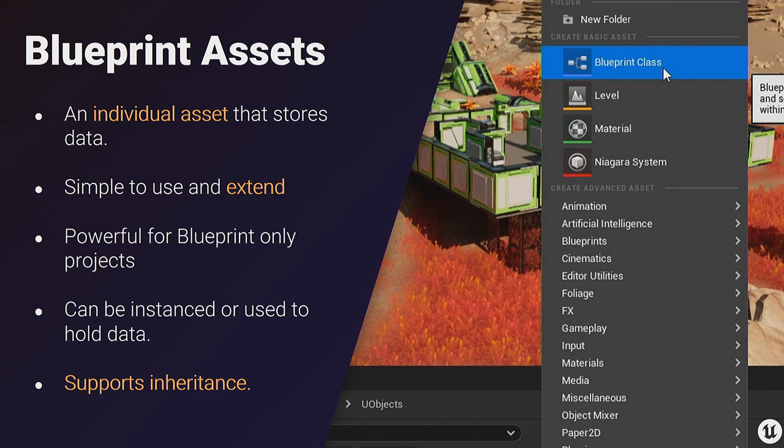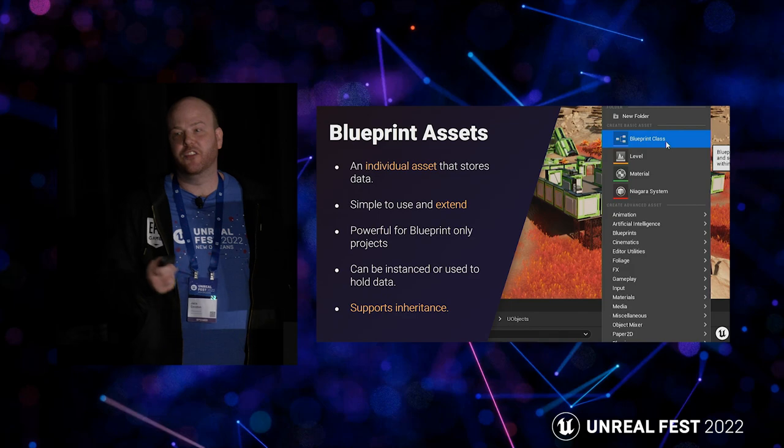Blueprint assets — let's get back to other ways we can hold data in Unreal Engine. This is an alternative to data tables. They're often called raw UObjects. Basically it's a Blueprint class that inherits from UObject that we don't intend to instance — rather, we want to read the default values. It's simple to use and extend, really powerful even in Blueprint-only projects. The design patterns I'm showing today are accessing the asset's default properties, but you can instance them and do really powerful things outside the scope of this talk.